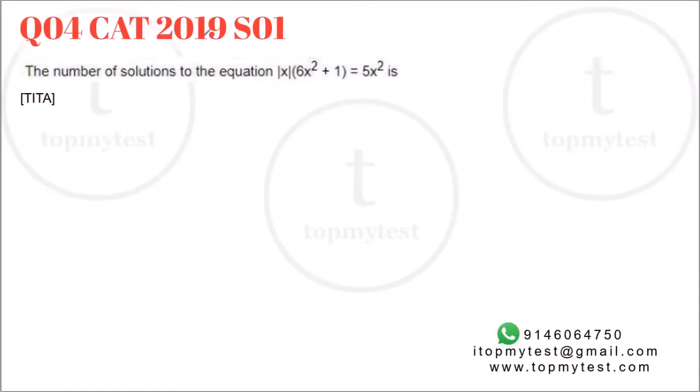Question number 4. This is from CAT 2019 slot 1. It involves concepts of modulus as well as quadratic equations. Let's see what this is. The number of solutions to the equation modulus of x times 6x square plus 1 equals 5x square. Now, one solution we can directly find is x equals 0. If I substitute x equals 0, both the values satisfy. Now, to open this modulus, if I put x is greater than 0 and x is less than 0.